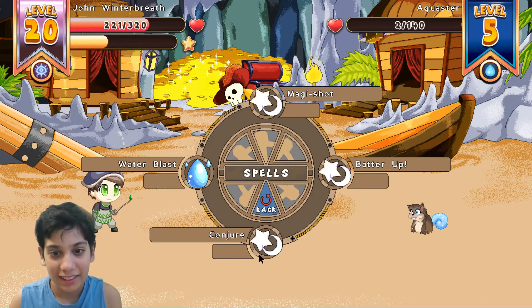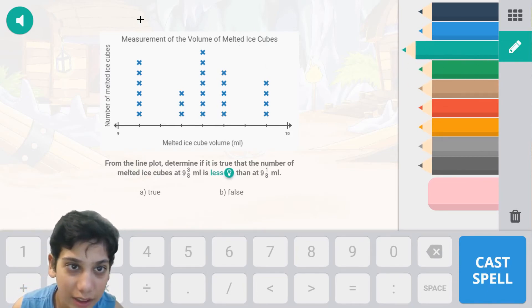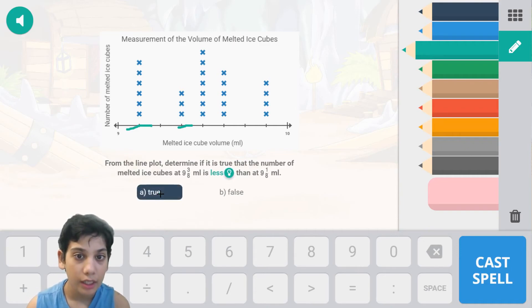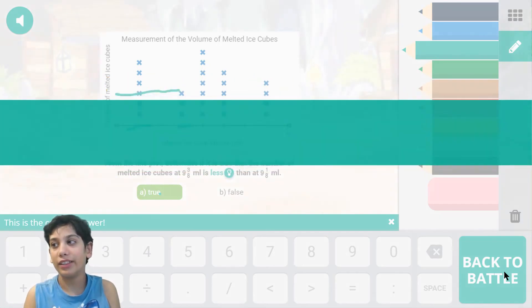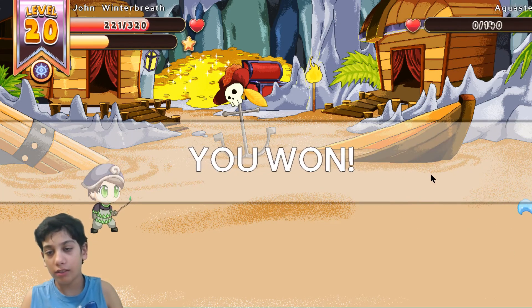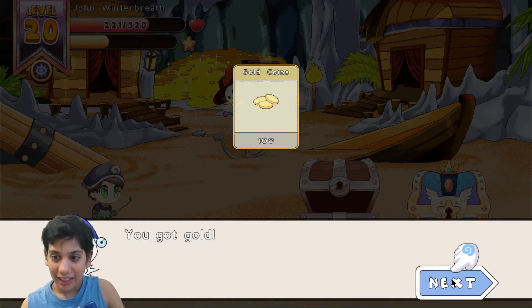Let's click attack and water blast. From the line plot, determine if it is true that the number of melted ice cubes at 9 and three over eight millimeters is less than 9 and one over eight millimeters. A: true. Our statement is true because 9 and three-eighths is down there while this is only above by 3. Let's cast spell. Correcto! 59 damage. Well, that was a little less but it's okay. Let's click attack, open the chest, and click next.